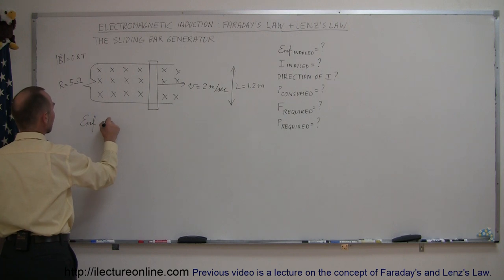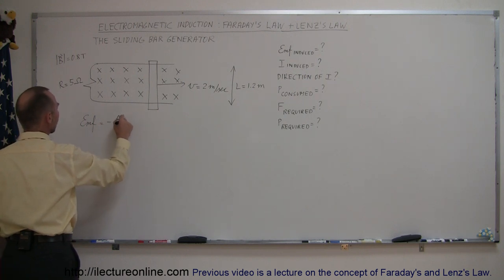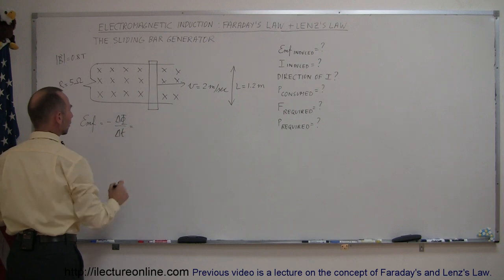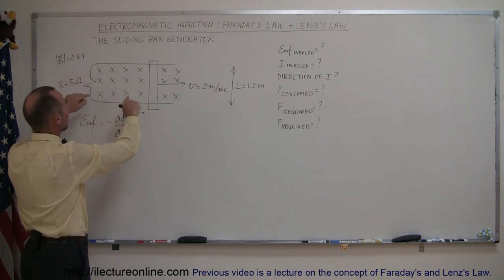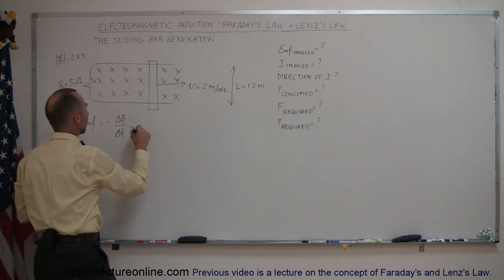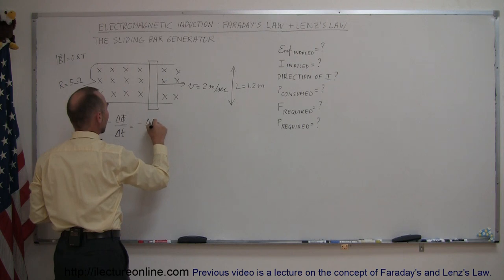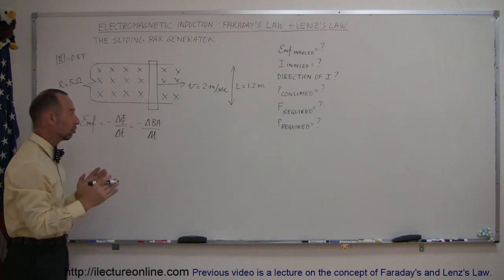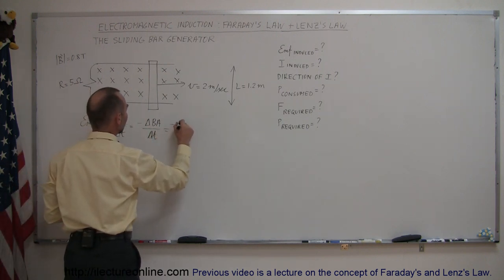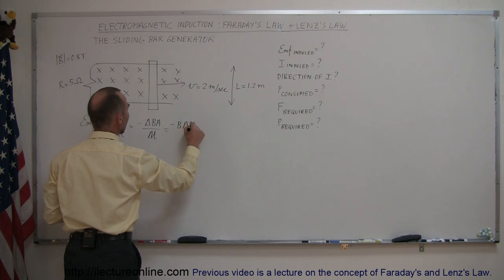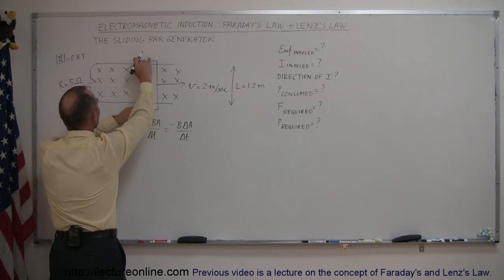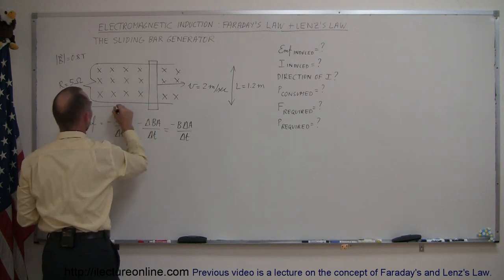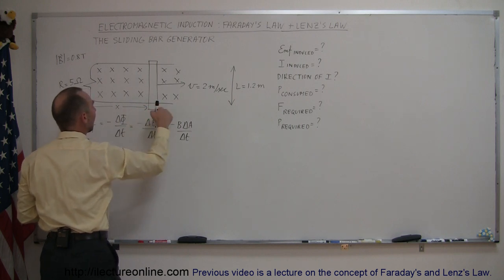The EMF induced is equal to minus the change in flux over time. The flux is simply the product of the magnetic field times the area of the loop, and since the area is perpendicular to the magnetic field, this equals minus delta B times A over time. In this case the magnetic field is not changing — it's the area that's changing — so B can come outside: minus B times the change in area over time. The area of the loop equals the length times the width, so we can call the length X and the width L.